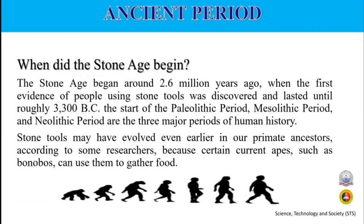In the ancient period, when did the Stone Age begin? The Stone Age began around 2.6 million years ago, when the first evidence of people using stone tools was discovered, and lasted until roughly 3,300 BC. It is the start of the three major periods of human history: the Paleolithic period, Mesolithic period, and the Neolithic period.